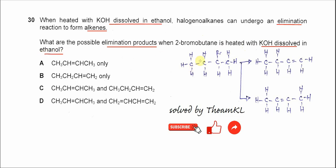First, you need to know the 2-bromobutane structure. The bromine will be removed along with a hydrogen — it's not just HBr that is removed. In elimination, the bromine leaves as bromide and the hydrogen on the adjacent carbon reacts with the hydroxide to form water.